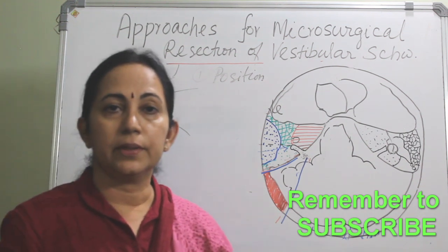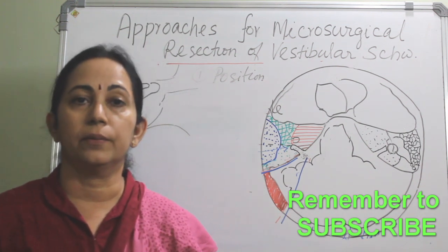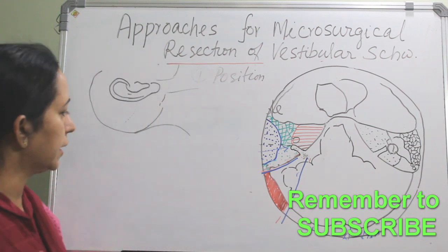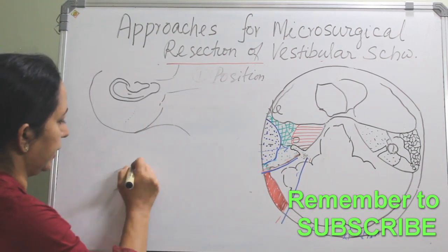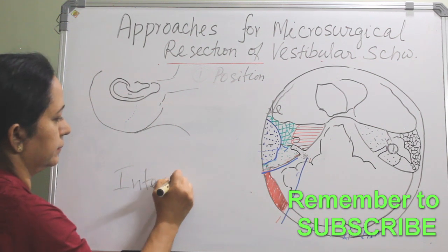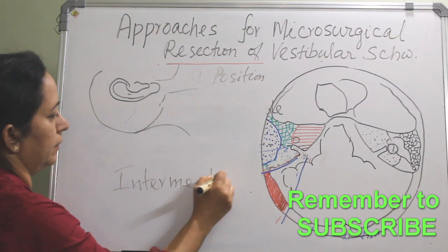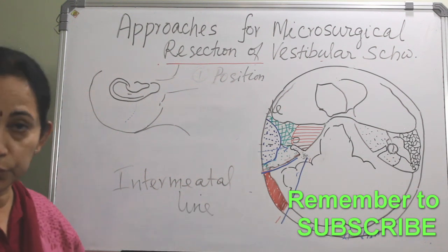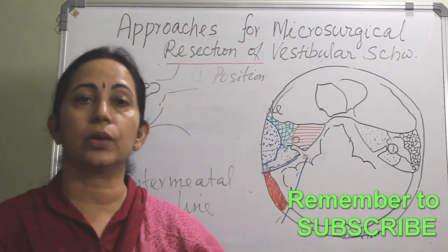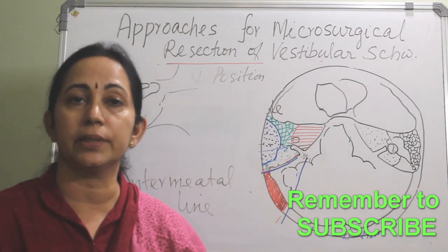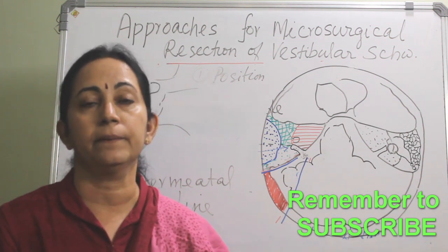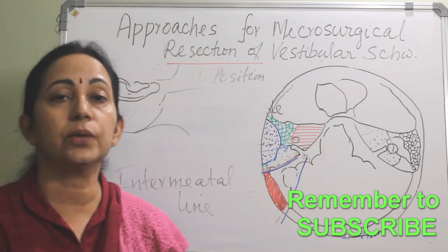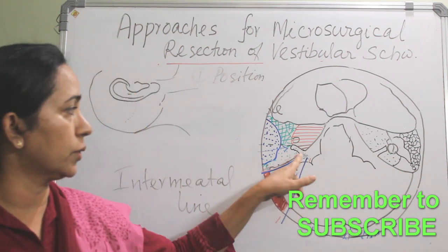For positioning: supine with the head on a head ring, or fixed with a neurosurgery clamp. The important thing is the inter-meatal line — this inter-meatal line should be perpendicular to the floor, so that the internal acoustic meatus will be in line with the external auditory canal. This will help the surgeon get a very good orientation of the internal acoustic canal.